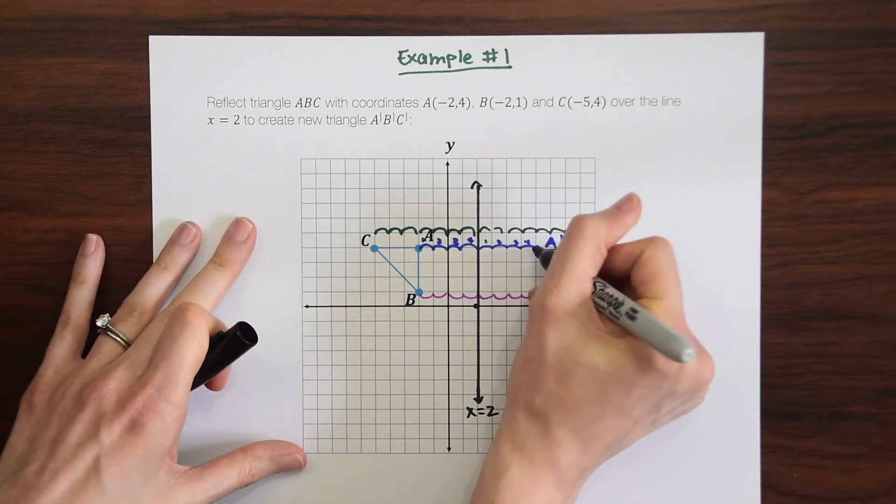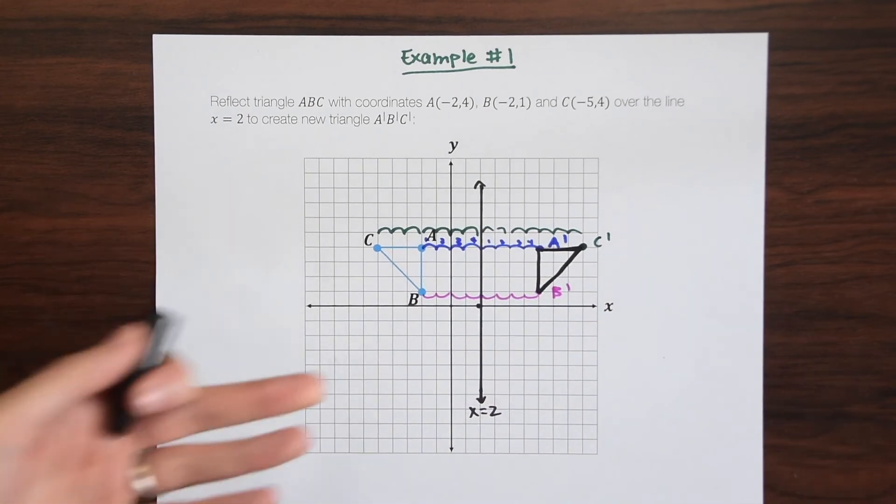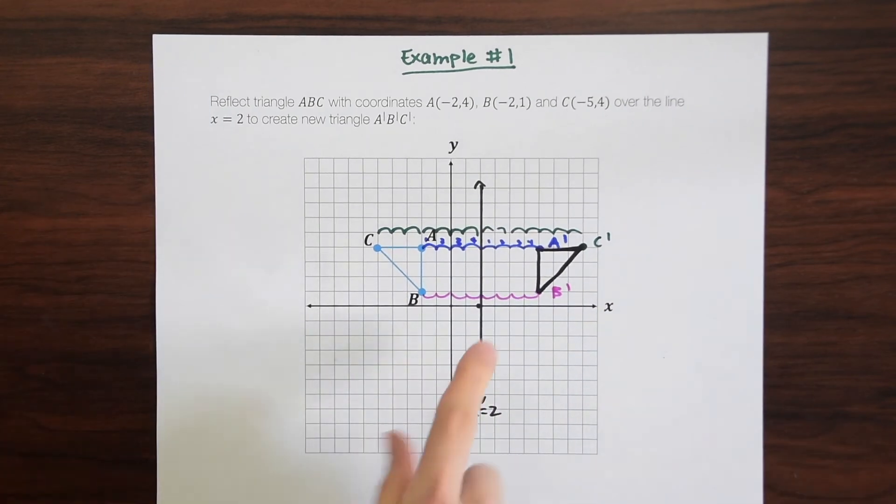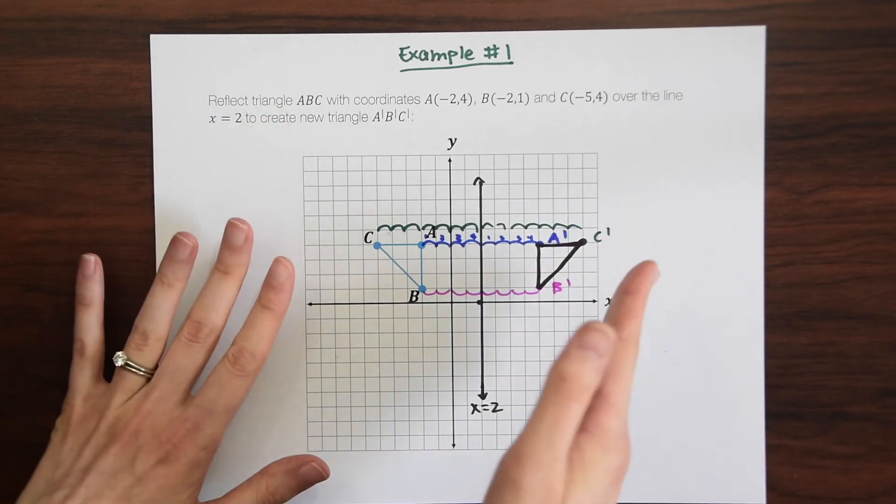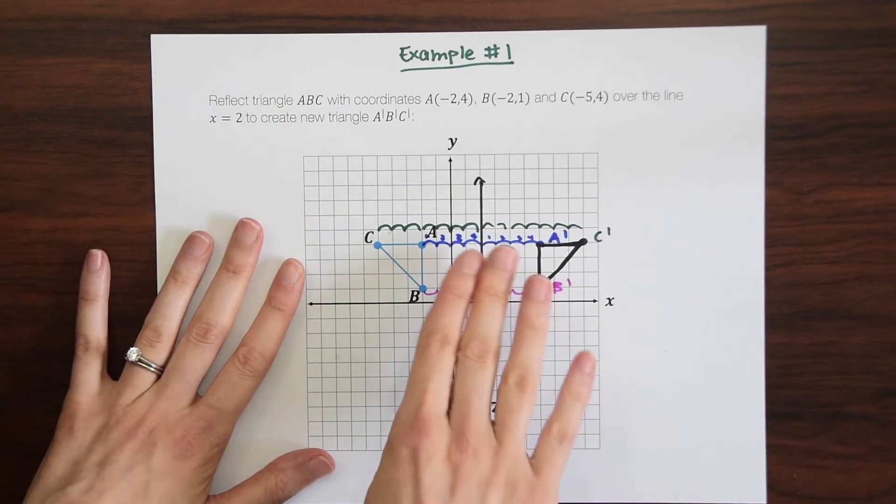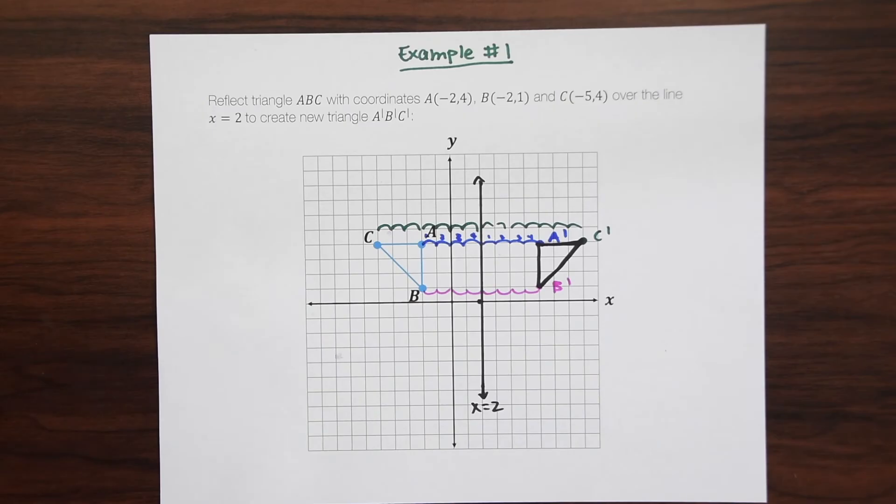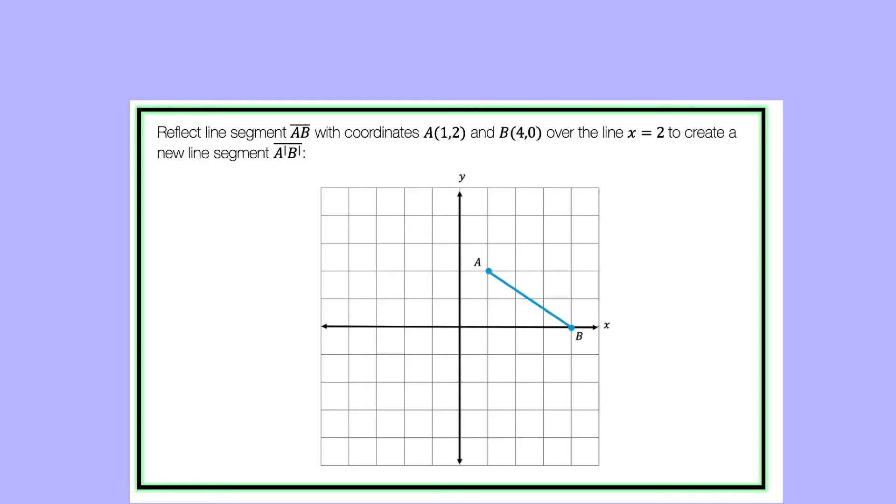So our new triangle A prime, B prime, C prime is right here. So you can see that we reflected our image. Each point is perfectly a mirror image away, equidistant away from this line x equals 2. And that's our answer. So now let's look at another example.